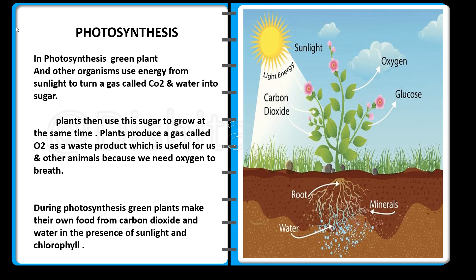At the same time, plants produce a gas called O2 (oxygen) as a waste product, which is useful for us and other animals because we need oxygen to breathe. During photosynthesis, green plants make their own food from carbon dioxide and water in the presence of sunlight and chlorophyll.